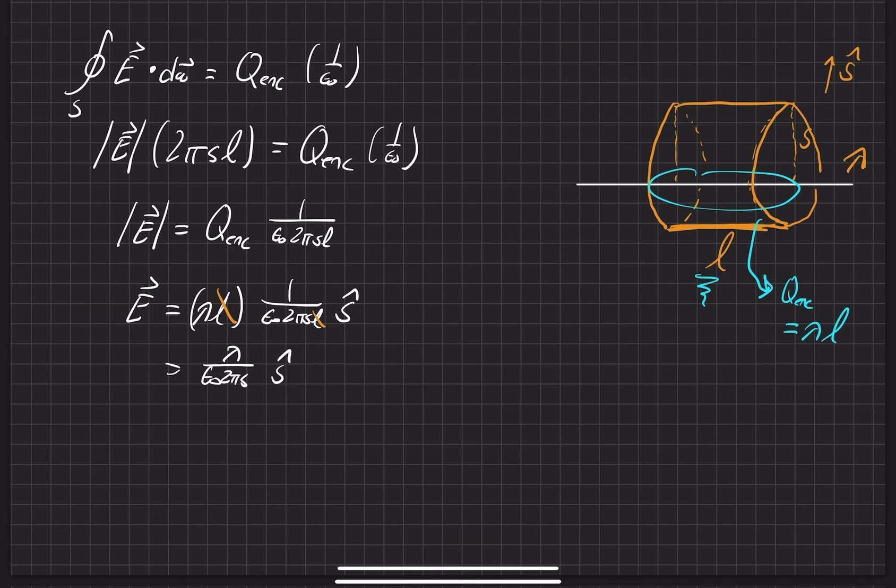And so finally, in our final form that we have here, this is the electric field at a distance s, not a point s, but a distance s radially around, arbitrarily around the infinitely long wire.